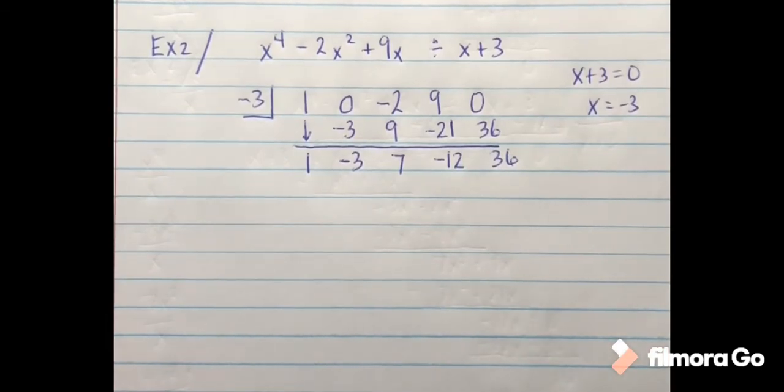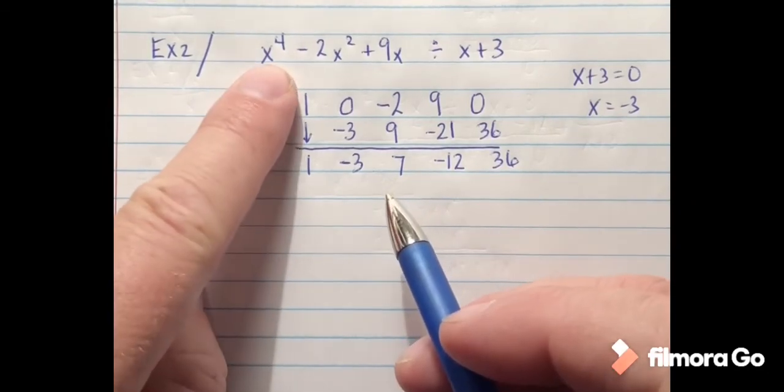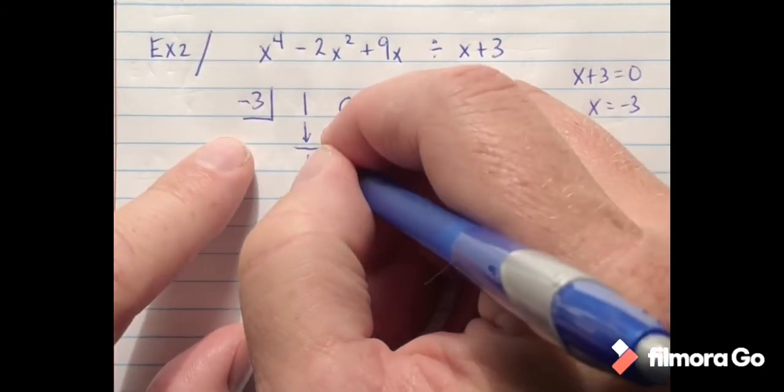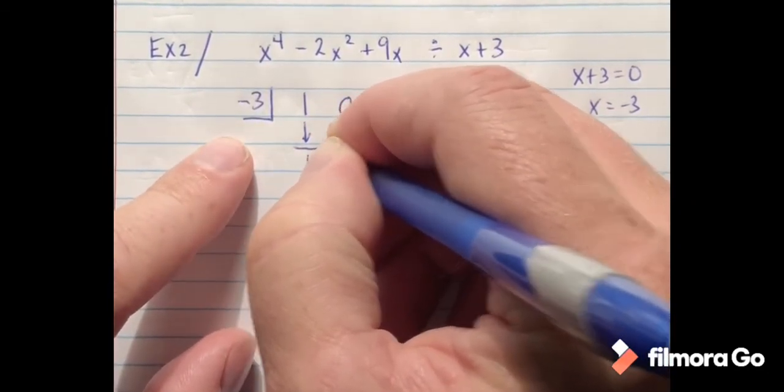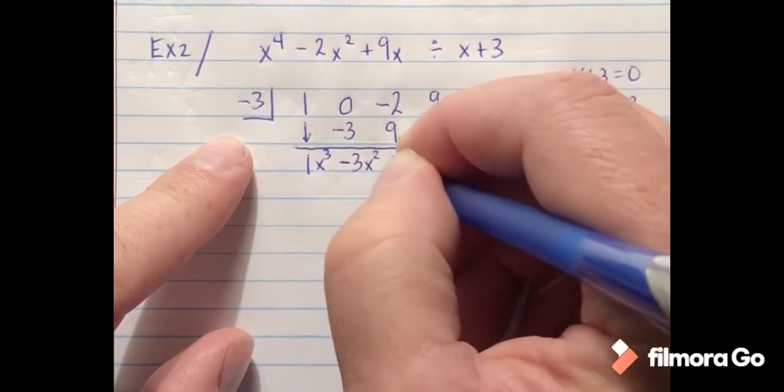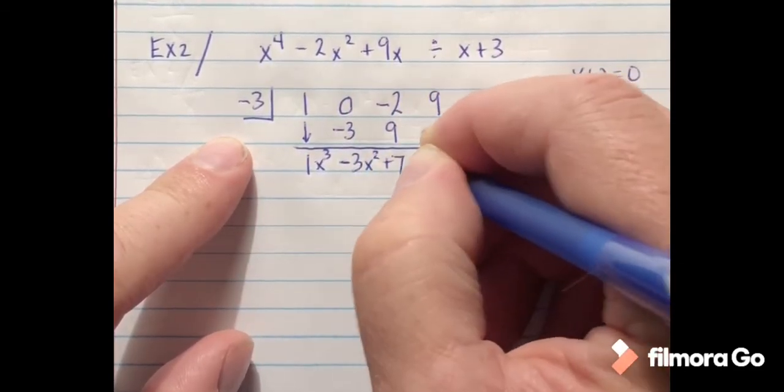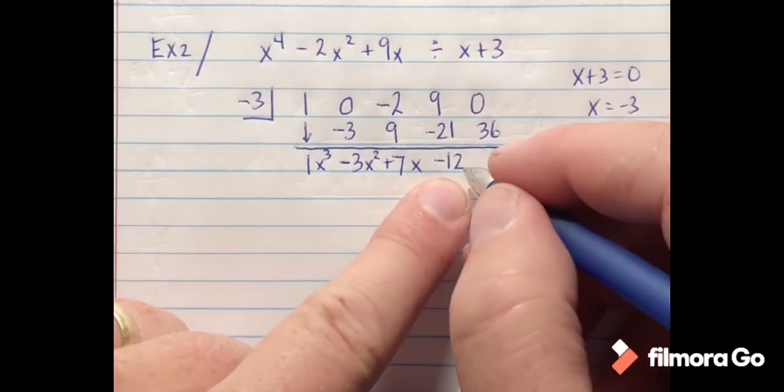And then I add that to get 36. Again I go back up to my original problem. Highest degree is 4, so this first term is going to be a 1x to the third minus 3x squared plus 7x minus 12.